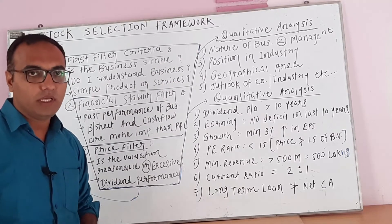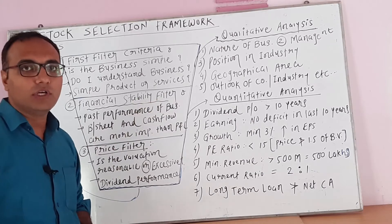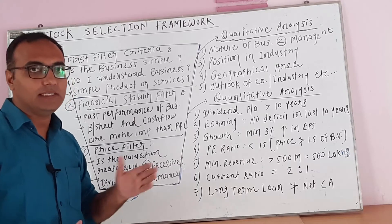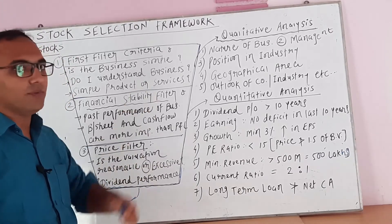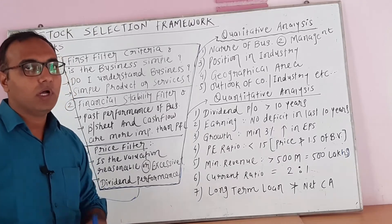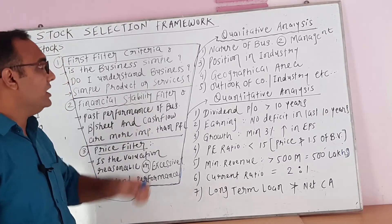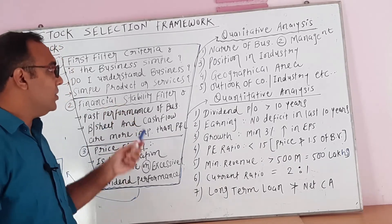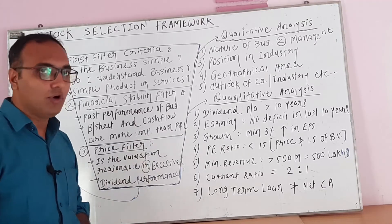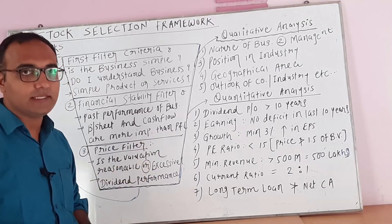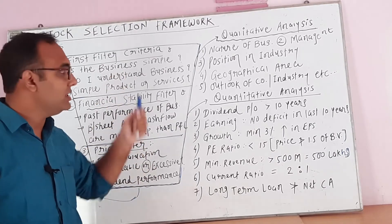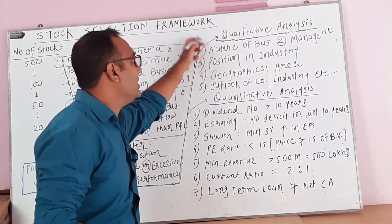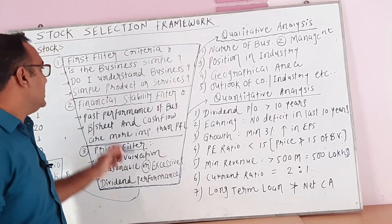In qualitative analysis of any company, you have to ask yourself these five questions: Number one, the nature of business — is it easy or tough to understand? Number two, management — is the management sound or poor in decision making? Number three, position in the industry — is the company at a better or down stage? Number four, geographical area. Number five, outlook of the company, industry, government policies, etc. If you are satisfied with all five answers, you pass the qualitative analysis criteria.